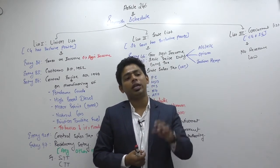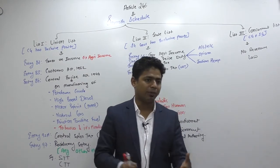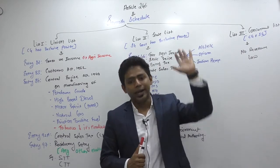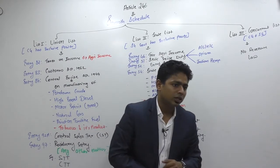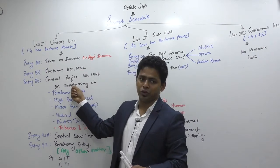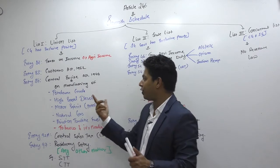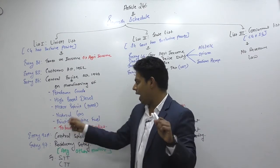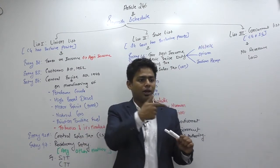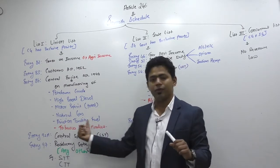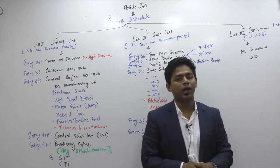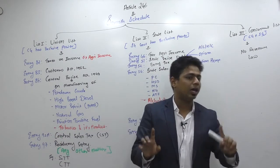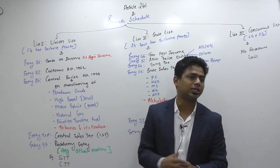Many people believe that excise was deleted after GST. Central excise law has not been deleted. Majority of items covered by central excise law have merged with GST, but central excise is still there on manufacturing of: petroleum crude, high speed diesel, motor spirit commonly known as petrol, natural gas, aviation turbine fuel (ATF — the high-power fuel used for aircraft), and tobacco and tobacco products. So on these items even after GST, excise is continued.